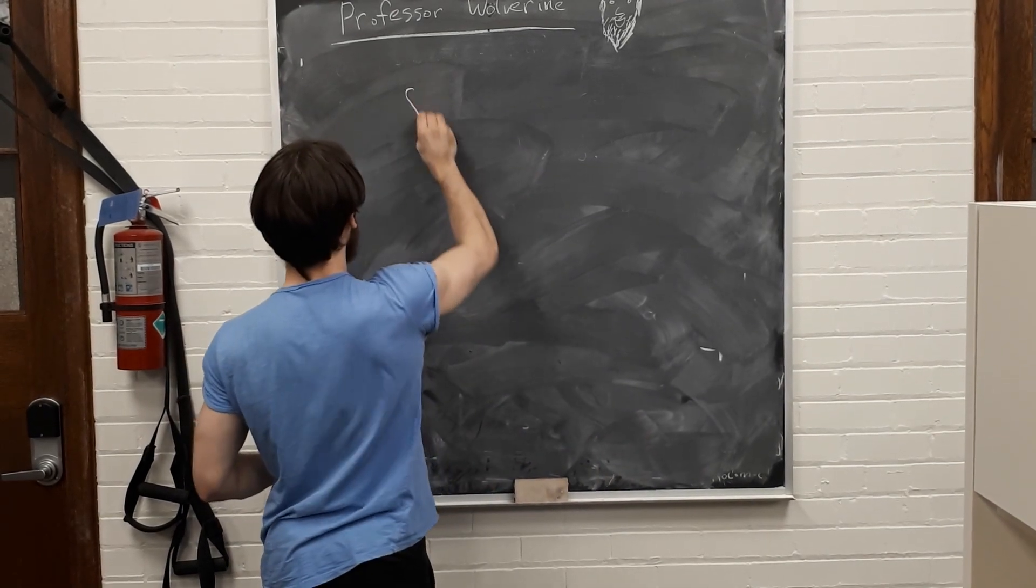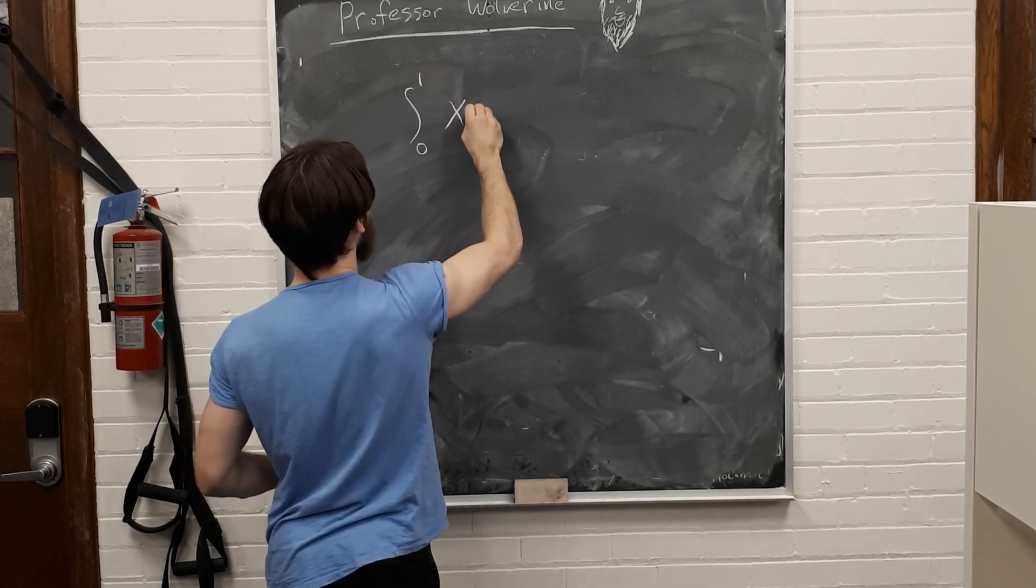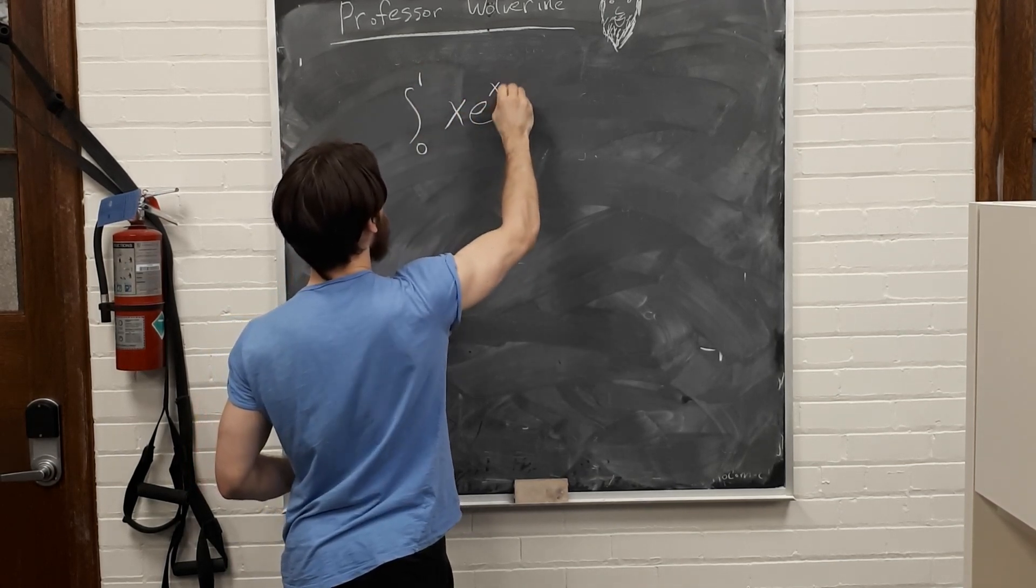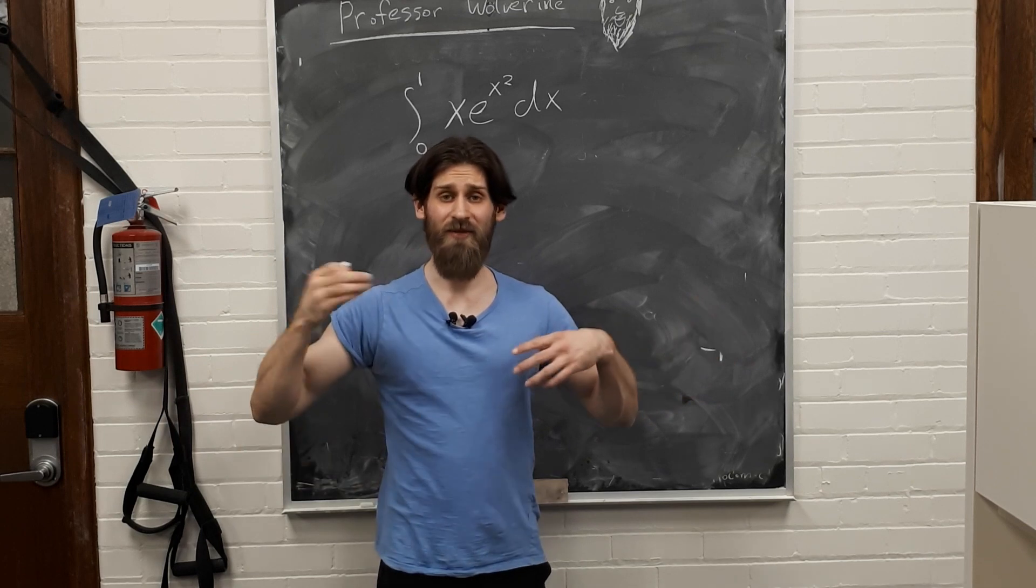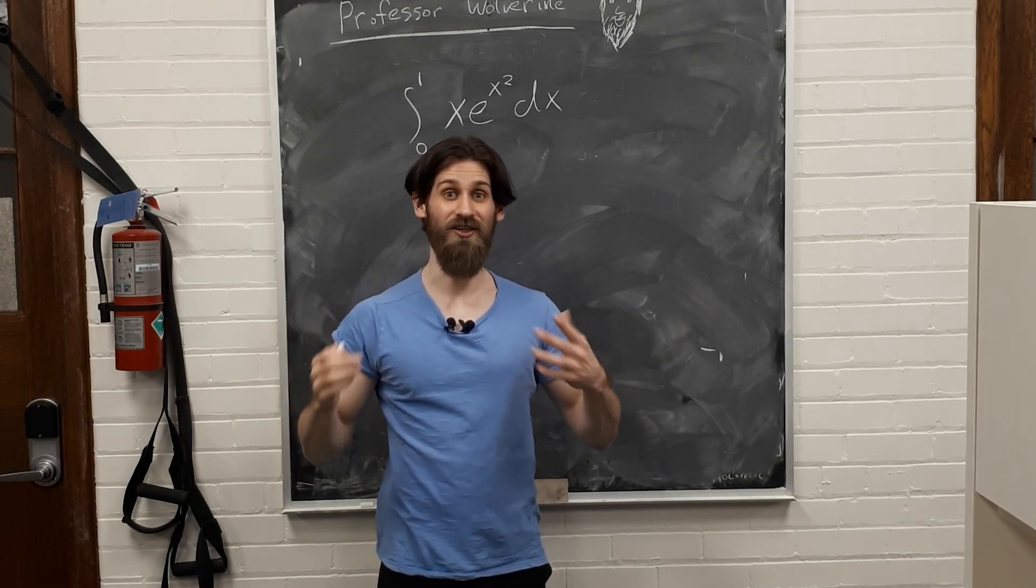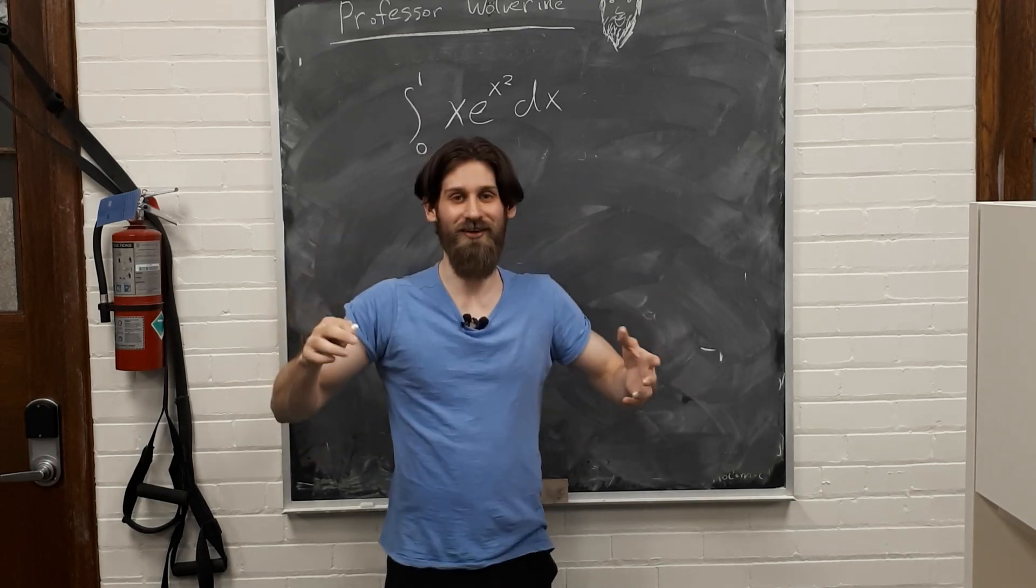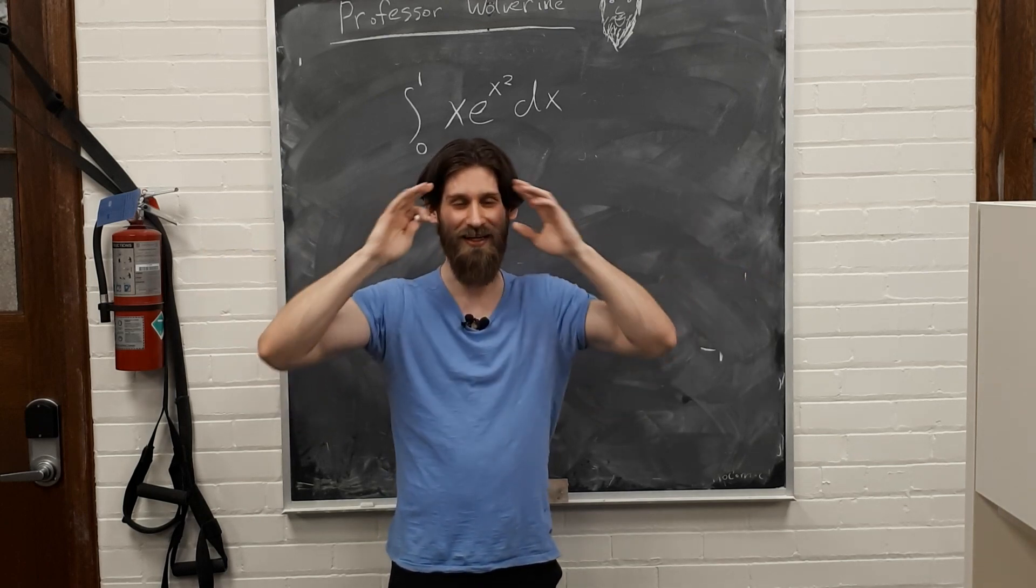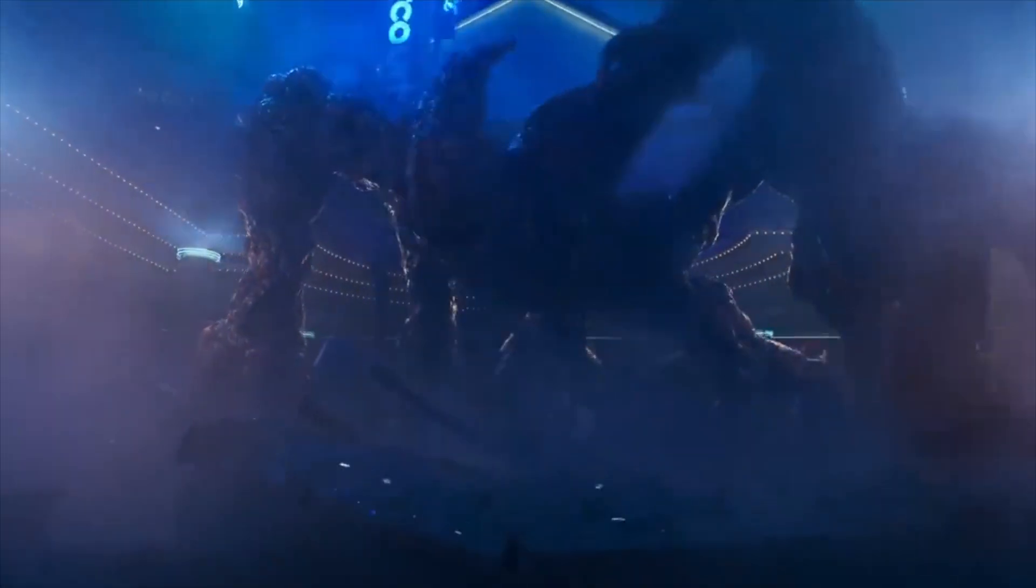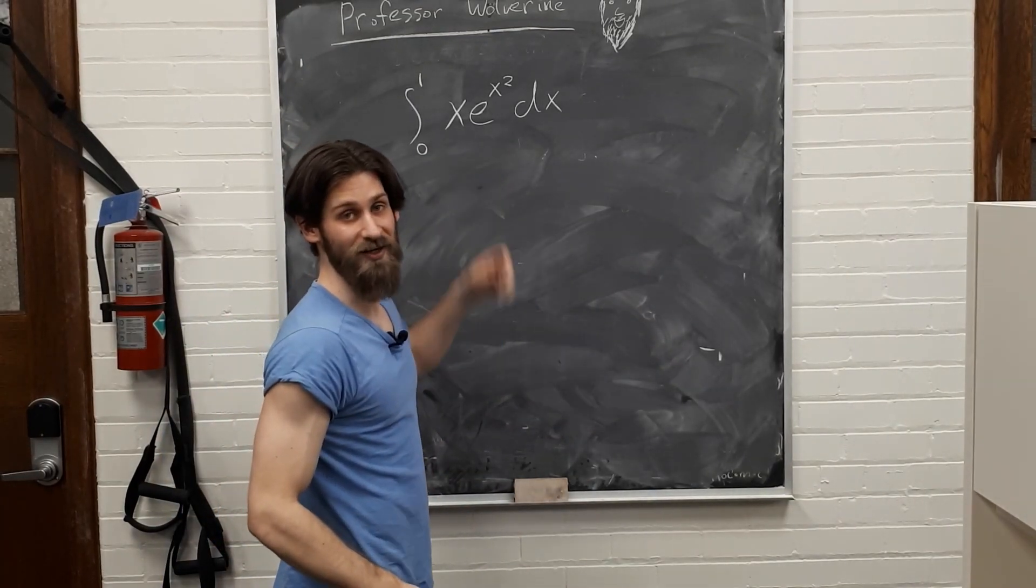Suppose you want to compute the Riemann integral, say from 0 to 1 of x e to the x squared dx. All right, so you could try to use a Riemann sum, compute the limit, but that's going to be a nightmare. Like, you should actually try to do it. You'll literally have nightmares. Like, you'll wake up sweating in the middle of the night, shivering, and you won't be able to go back to sleep, and then you can have insomnia for weeks and months, and it's going to take over life, and it's going to be nuts. Okay?